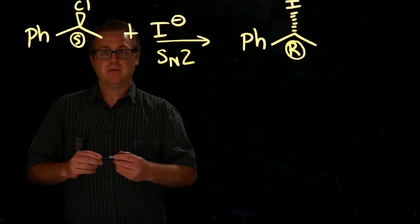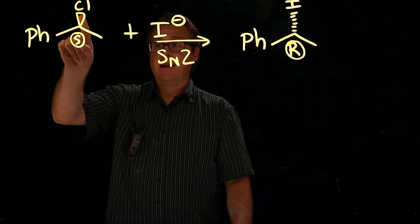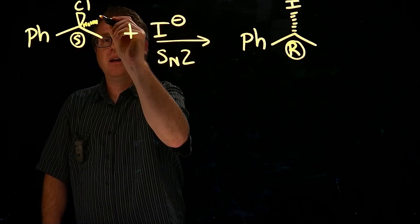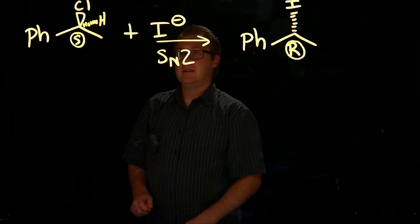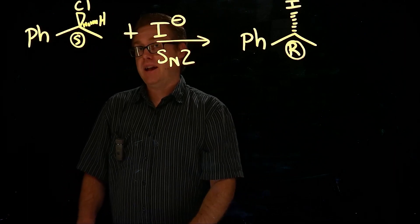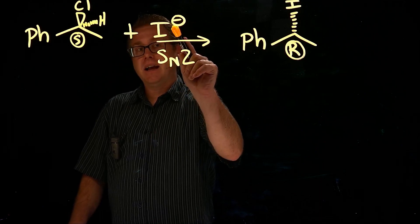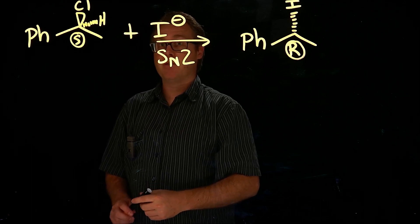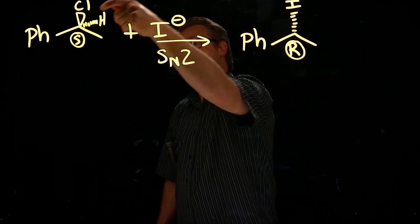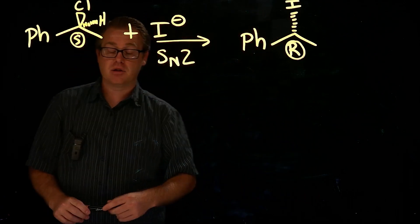Why does it invert the stereocenter? This molecule has a front face and a back face. The chlorine is on the front face. So if this iodide wants to attack this stereocenter, it's not going to approach the front face because the chlorine is already there as a wedge. The approach of this iodide is going to be backside attack — where the hydrogen is — approaching from that side. The iodide nucleophile comes in via backside attack; that's why it's dashed, because it's going to be on the exact opposite side from the leaving group.